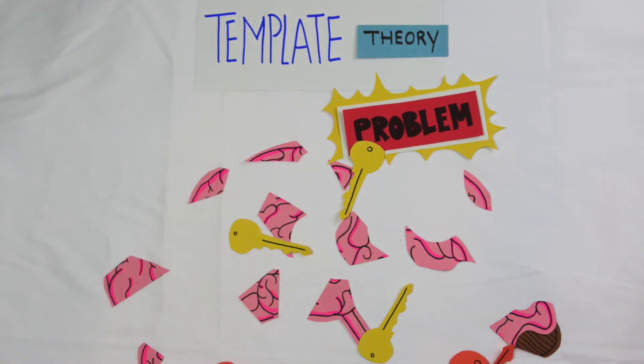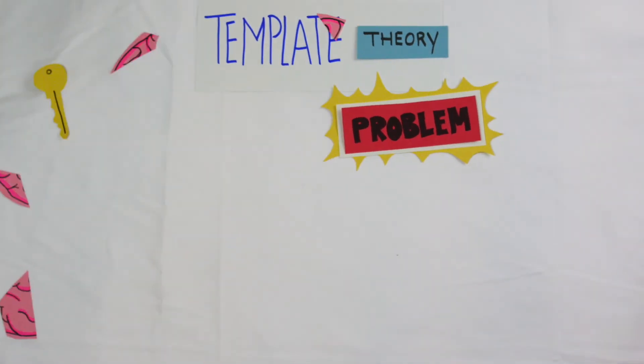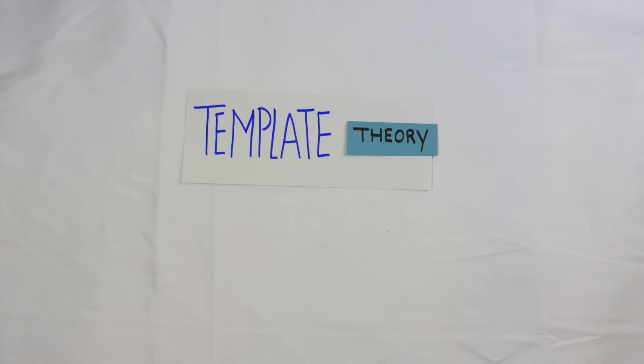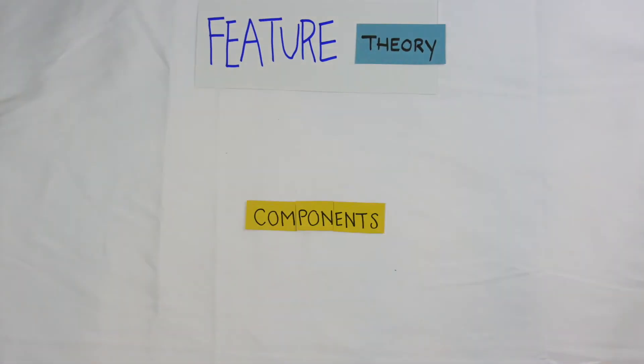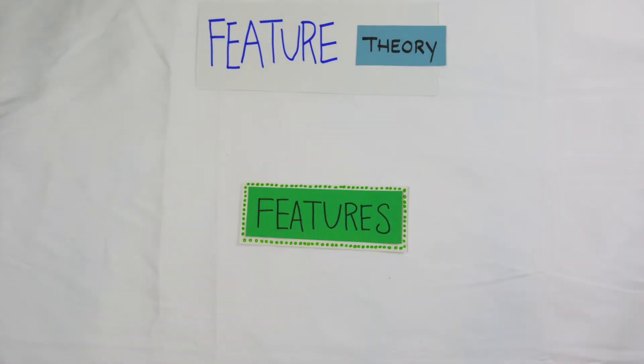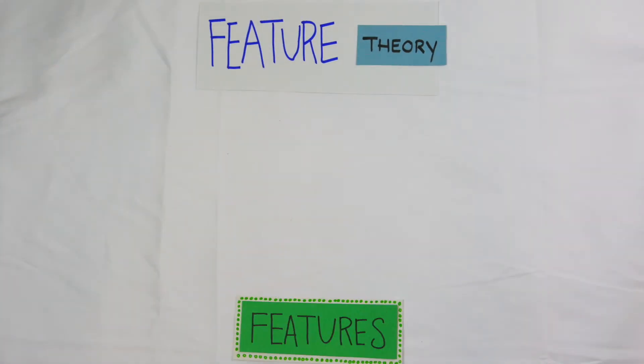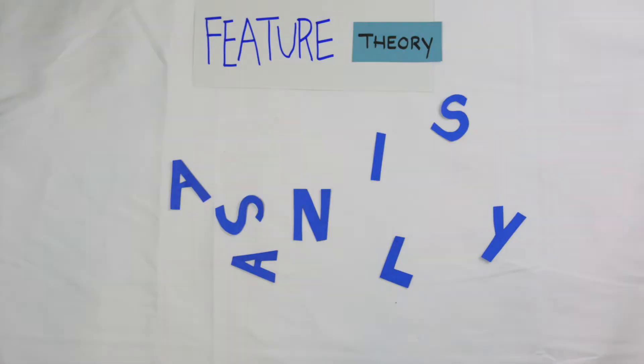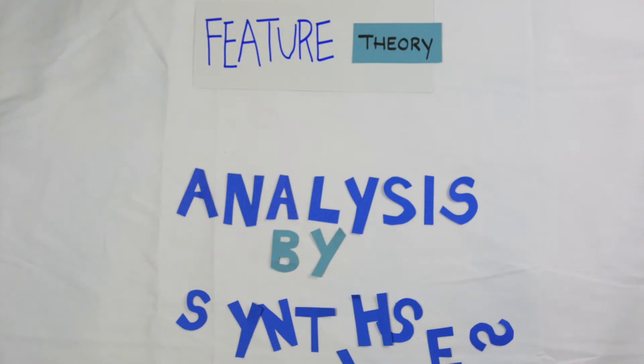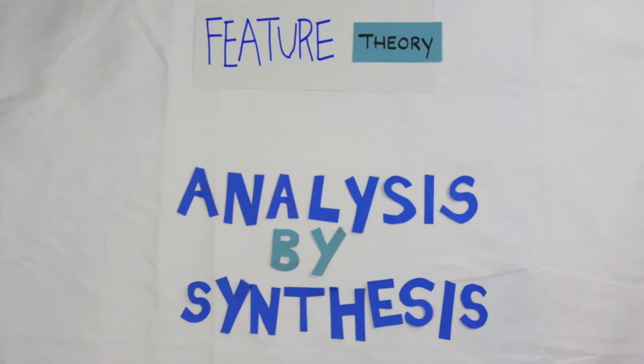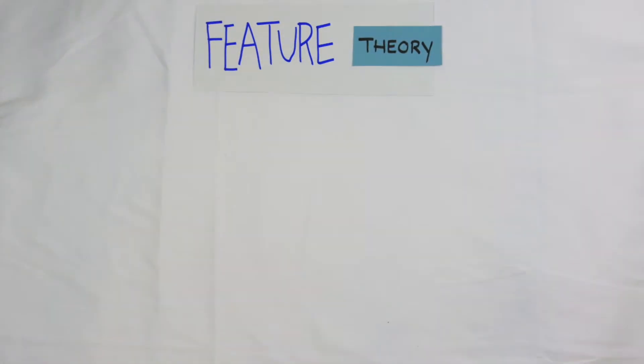Feature theory breaks things down a little bit further than template theory, using components or features of the experience instead of the experience as a whole. The general idea behind feature theory is that in order to decrease the amount of storage needs, we have analysis by synthesis.